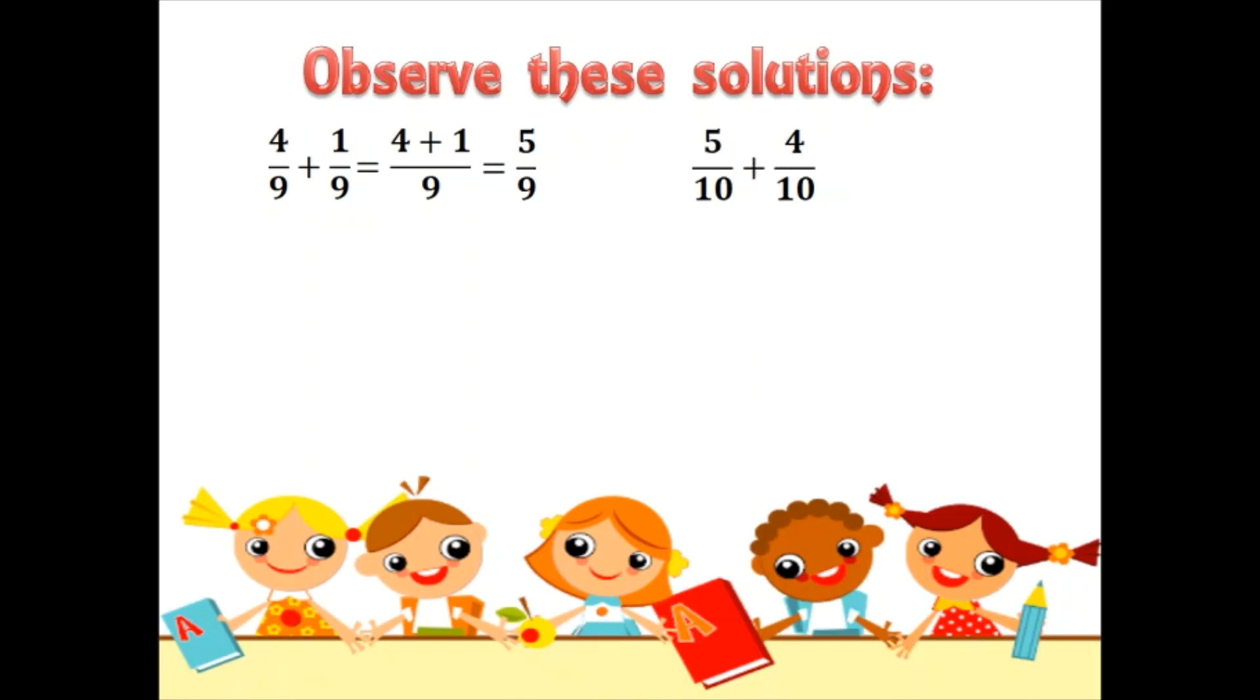5 by 10 is added to 4 by 10. So you have to add 5 and 4 in the numerator and write 10 as the denominator. The answer will be 9 by 10.